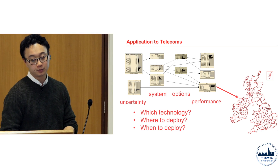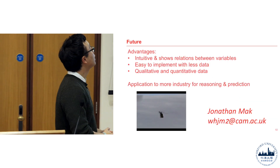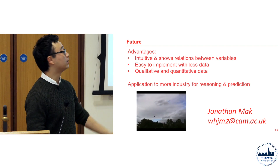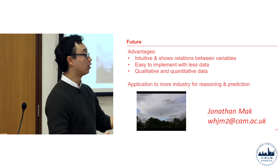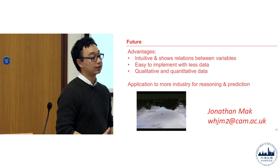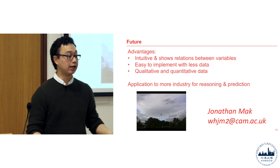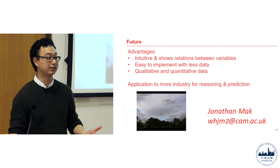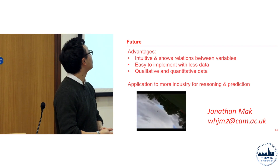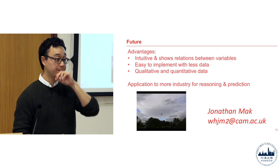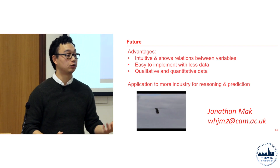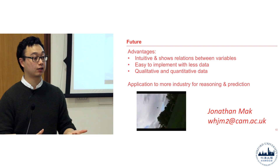Why have I chosen Bayesian networks? Hopefully the medical example showed how all nodes are affected and how probabilities update with each observation. They're easy to implement with less data — a lot of machine learning requires huge datasets, but one limitation of my PhD is that I don't have much data from the company. Bayesian networks don't require that much data, and they can handle both qualitative and quantitative inputs, unlike traditional optimization which is purely mathematical.